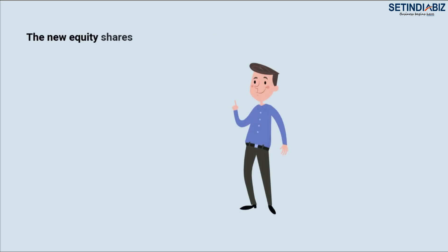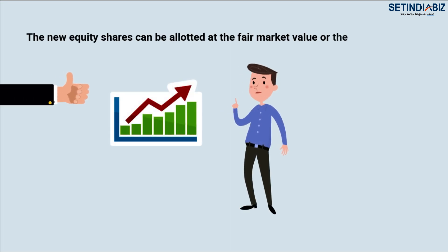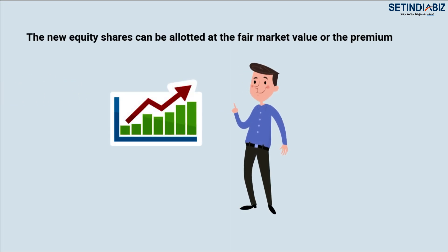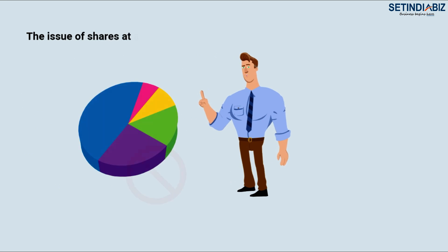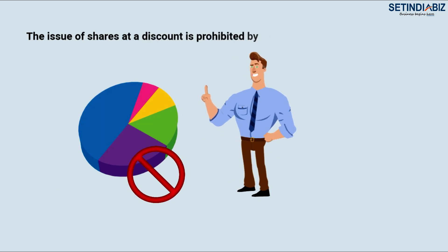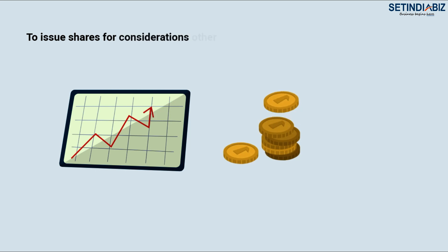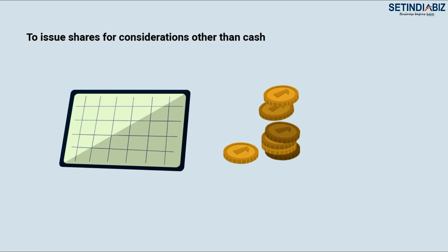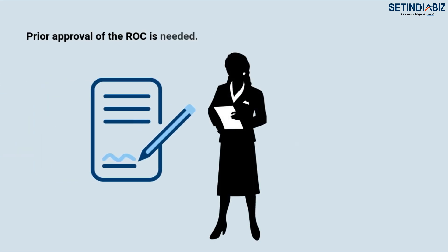The new equity shares can be allotted at the fair market value or at a premium. The issue of shares at a discount is prohibited by the Companies Act 2013. To issue shares for considerations other than cash, prior approval of the ROC is needed.